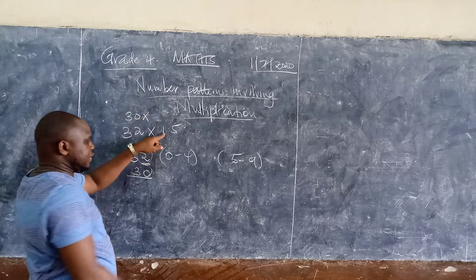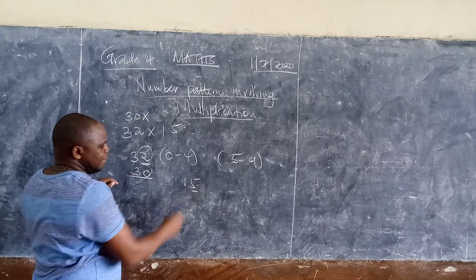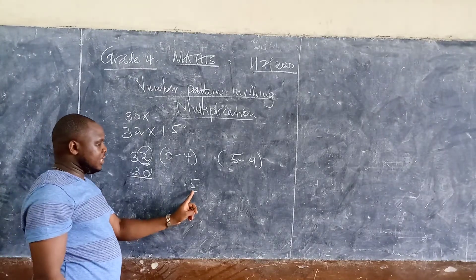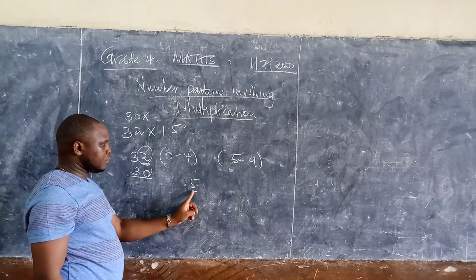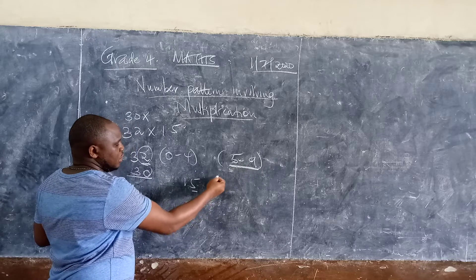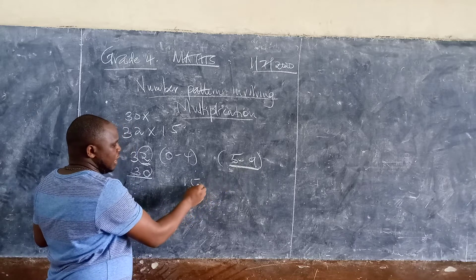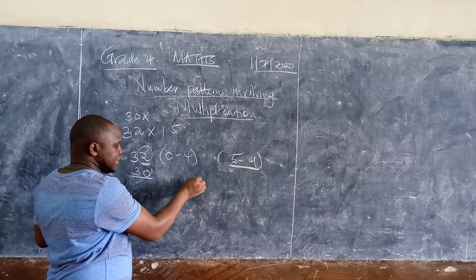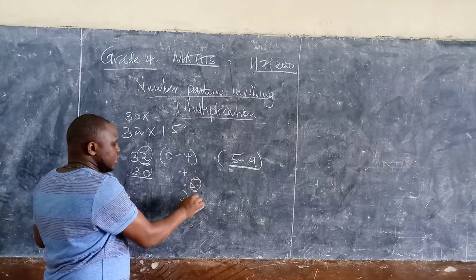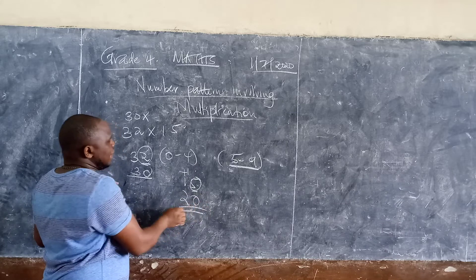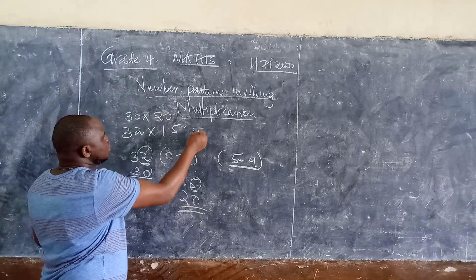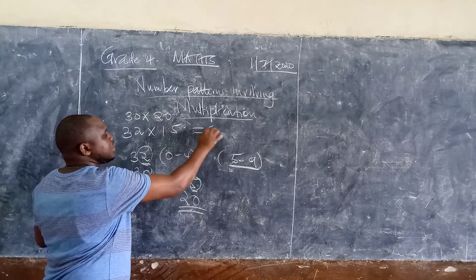Look at fifteen. The number on the ones side is five, which is between five to nine. Meaning that you are going to put this as a zero and you are going to add one there. So this number is going to become twenty. And if you did this well, you got six hundred.